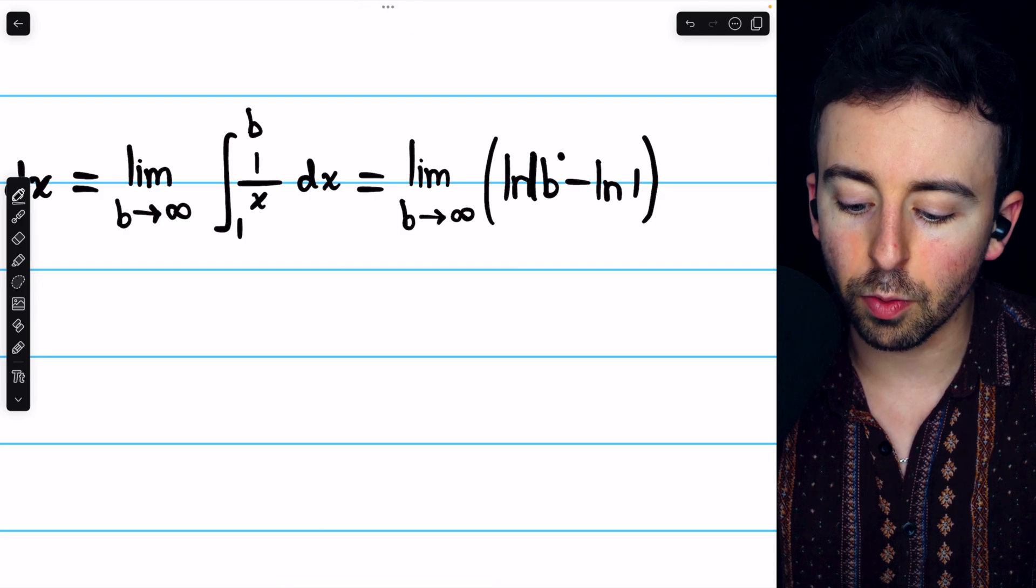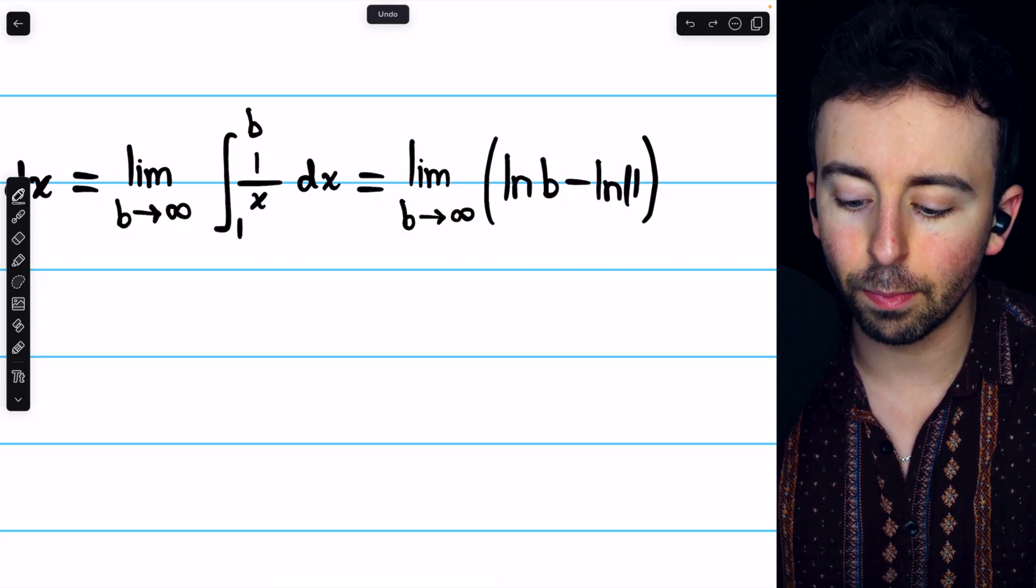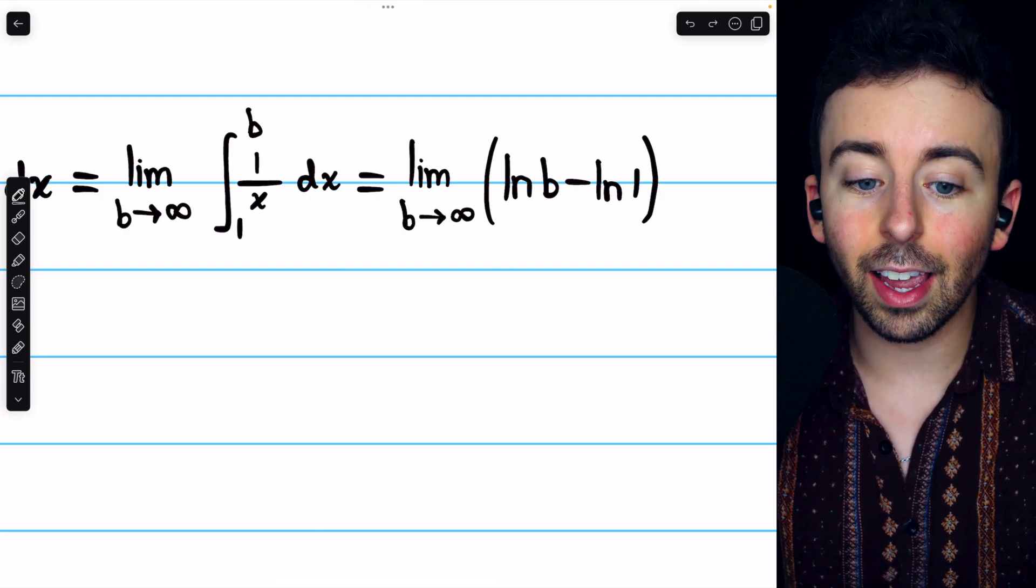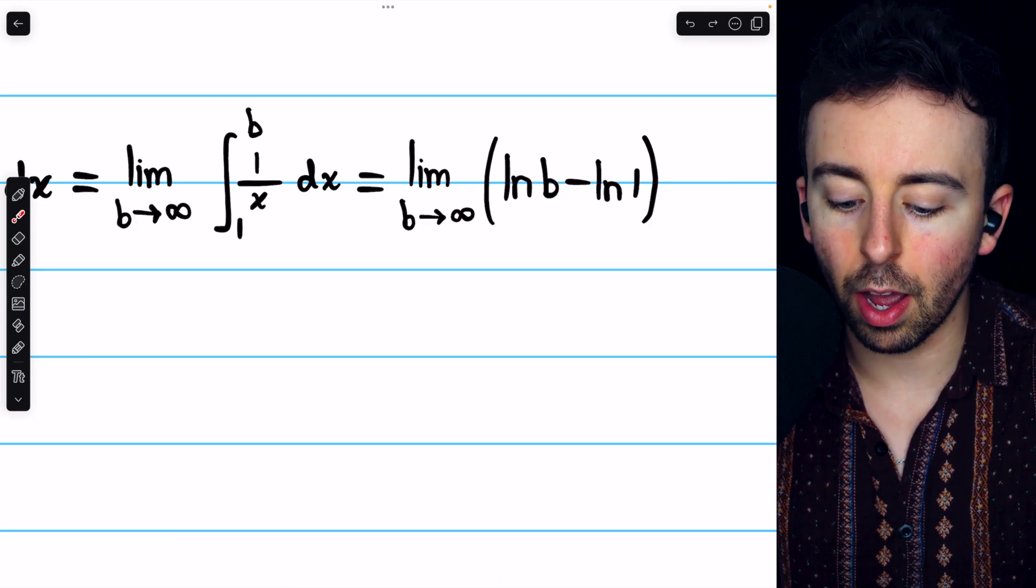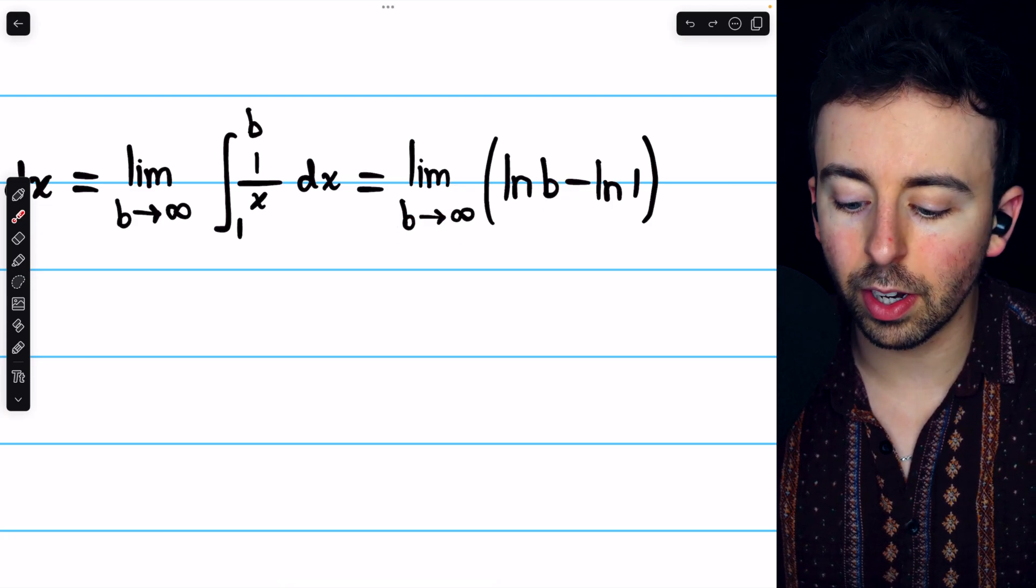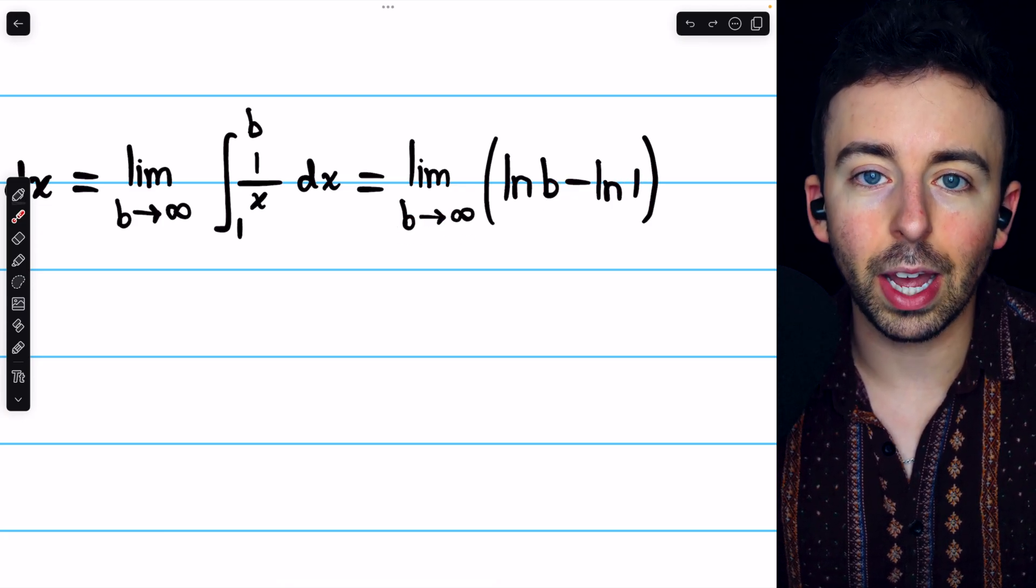Notice we're not using absolute value bars here because the inputs of the log function, in this case, are positive. b is positive because it's going to positive infinity and 1 is positive as well.